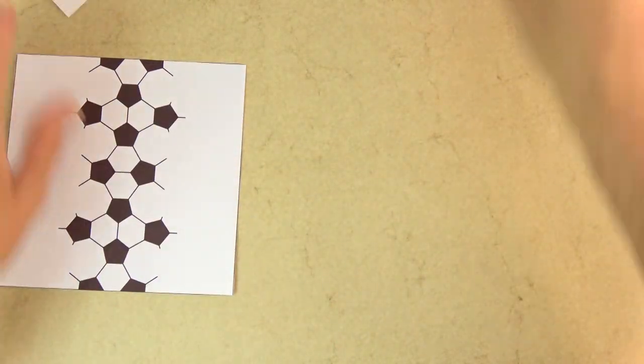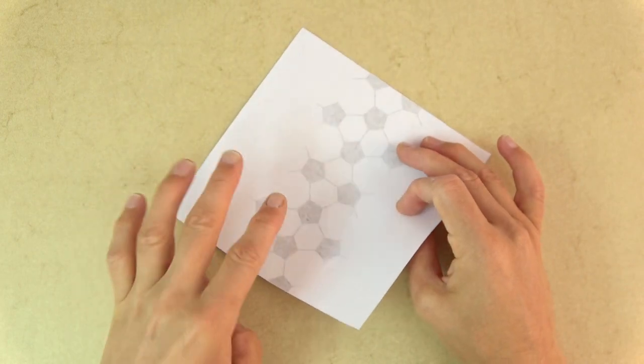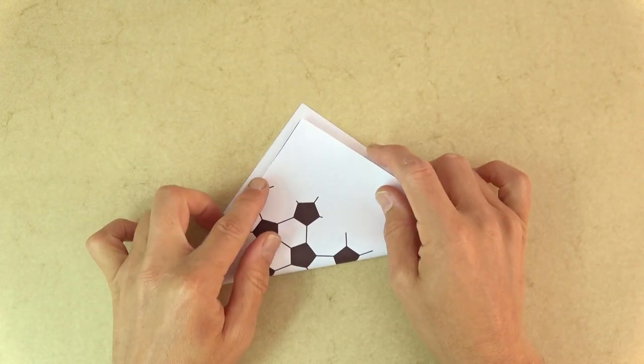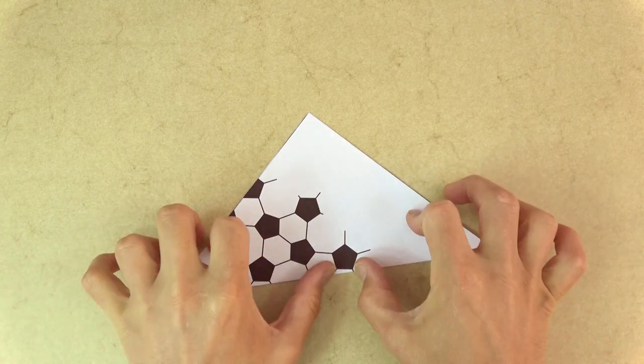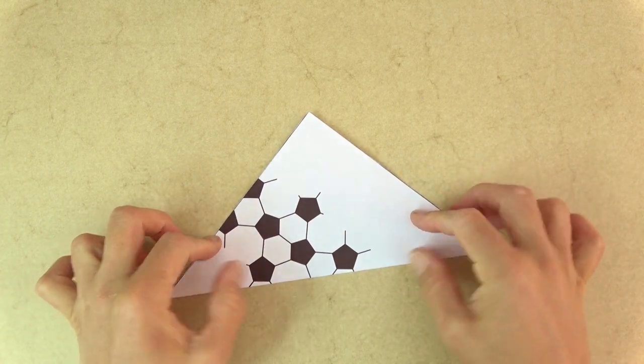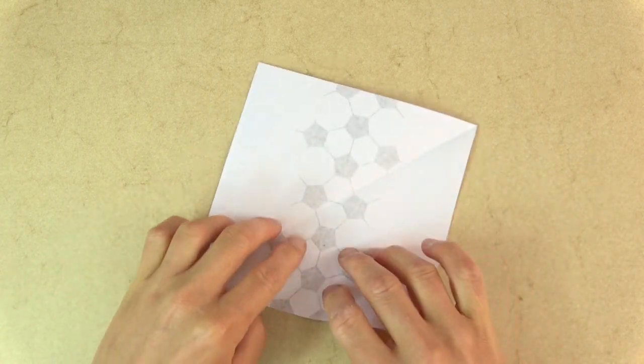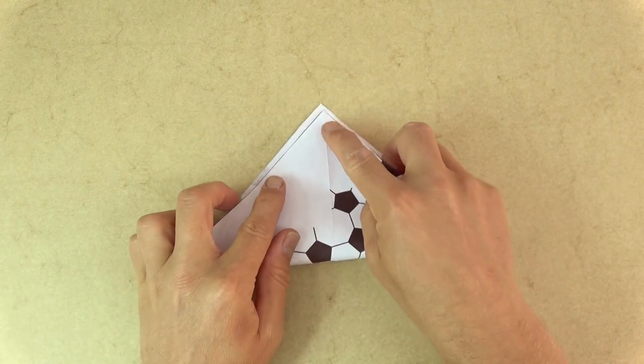And now I'm gonna show you how to fold the traditional water bomb. So let's turn over and fold it in half diagonally in either direction. And unfold, rotate, and fold it in half in the other direction.